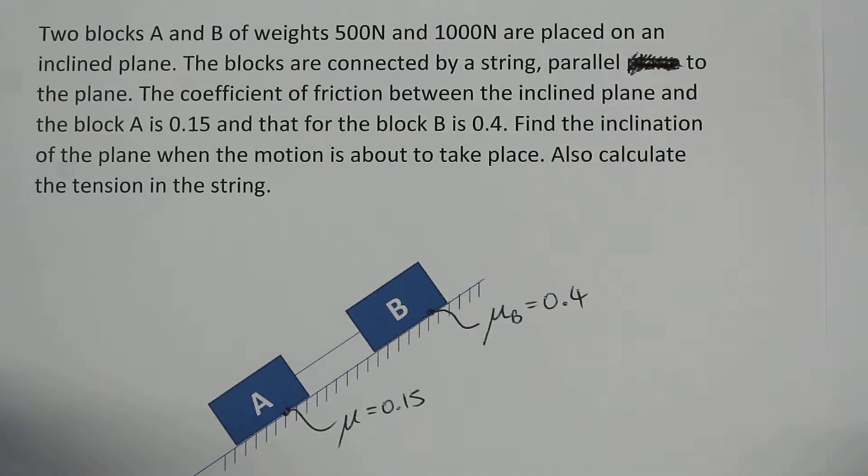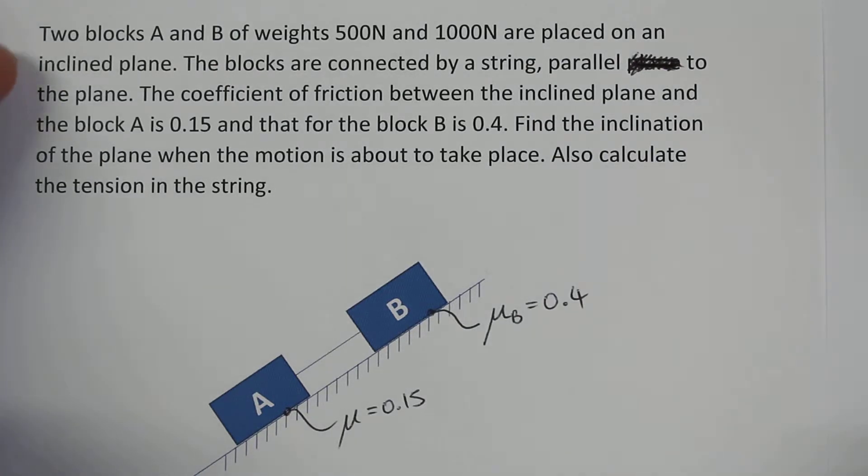Hi guys, this is the second part of a video which is trying to go through the following question. Two blocks A and B of weights 500N and 1000N are placed on an inclined plane. The blocks are connected by a string parallel to the plane.